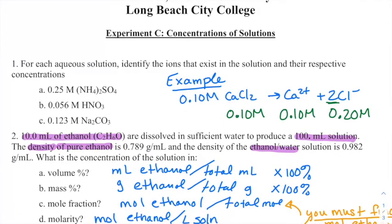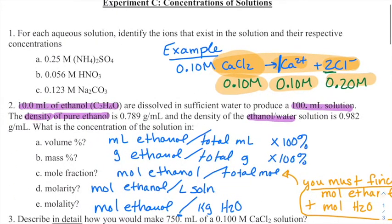First, for each aqueous solution, you're identifying the ions that exist and their respective concentrations. This is similar to what we did today when we were looking at electrolytes. You're going to write out your chemical reaction. They tell you what the molarity of the original compound is, and then you're going to tell me what is the molarity of each individual ion. Because we had one calcium, we have the same molarity for calcium chloride and calcium. But because we have two of the chlorides, we have twice as much chloride as we did for the original compound.